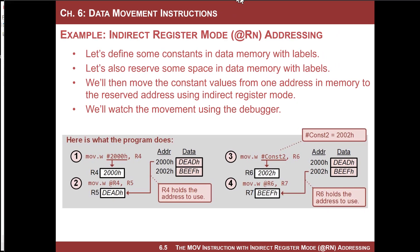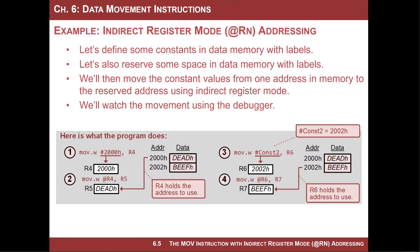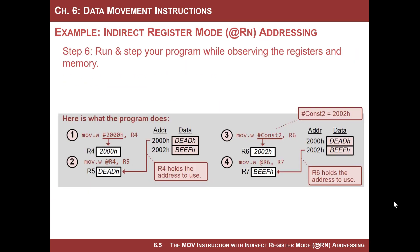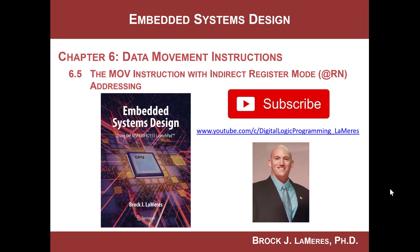That is indirect register mode addressing. Remember, it's the @ symbol, and it's a two-step process: first, put the address pointer into a register using immediate addressing; then use that register with @ to access the information in memory. Nice work — remember to subscribe to my channel and see you next time.